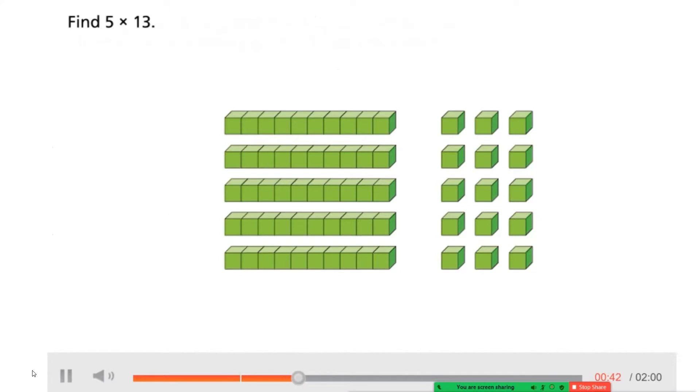Find 5 times 13. Let's pause for a second here and we can see that they made an array. They didn't make it the regular way we were used to making it with individual little counters. They used 10 rods and little 1 cubes. So this is still an array, these are still in equal groups. When they group them this way, you're going to see how this makes it a bit easier for us to do the multiplication after.